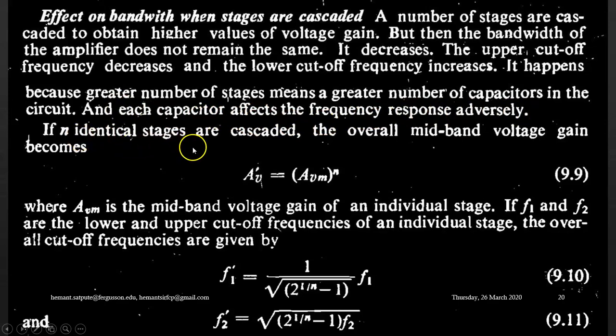If n identical stages are cascaded, the overall mid-band voltage gain becomes A'V equals Avm raised to n, where Avm is the mid-band voltage gain of an individual stage.